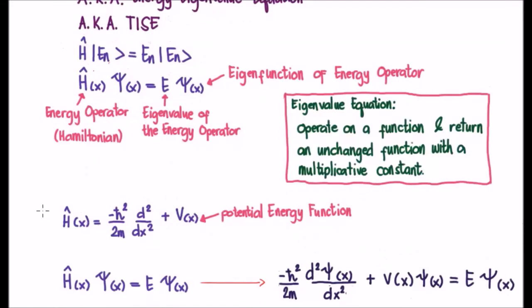The Hamiltonian operator is an instruction to calculate the energy of the system. We could have potential energy, kinetic energy, and all sorts of other types of energy. Usually for this level we talk about potential and kinetic only.